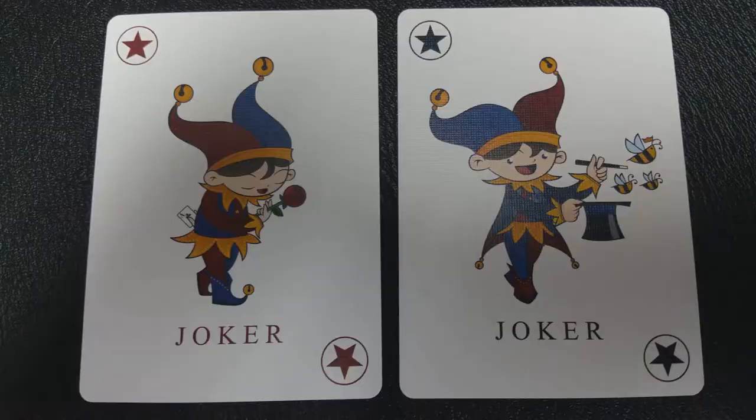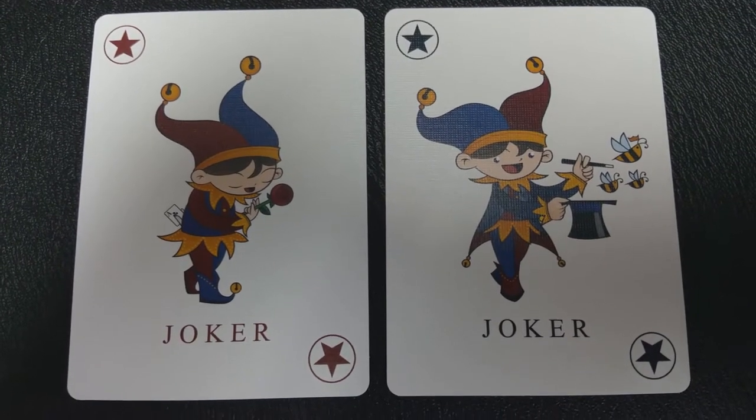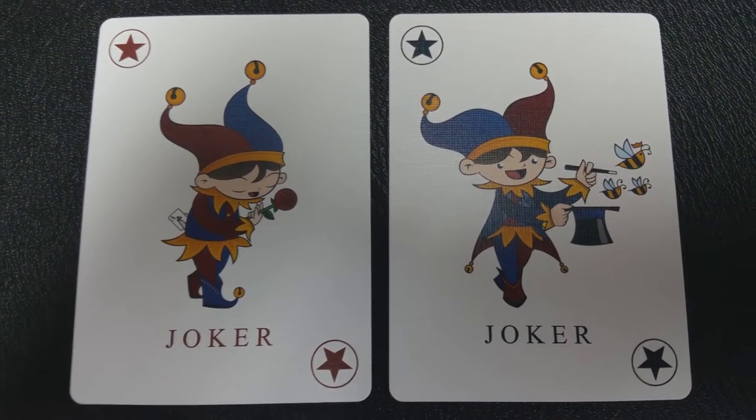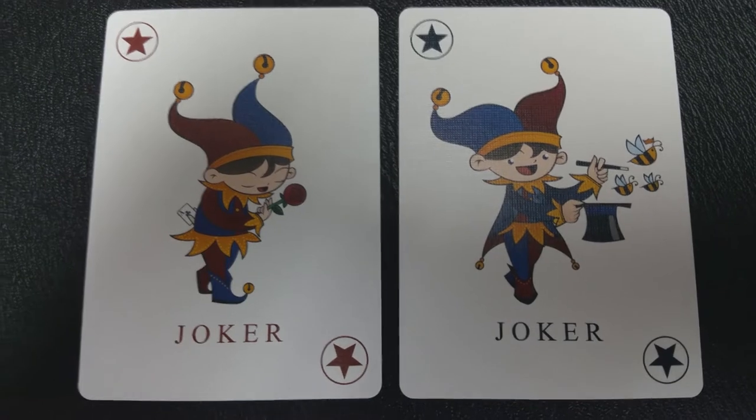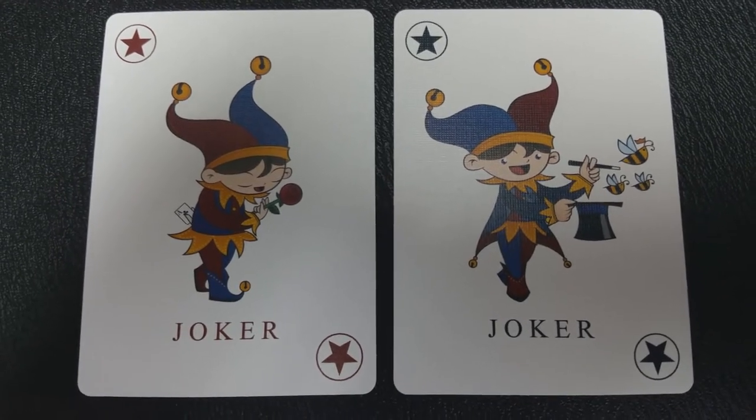With this deck, you're going to get two jokers. You're going to get a single joker. He's holding a flower. He's kind of looking down as he's walking, and then the second joker, he's pulling bees out of a magic hat.